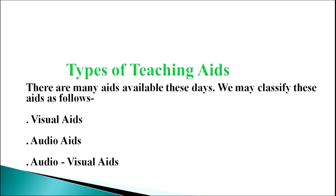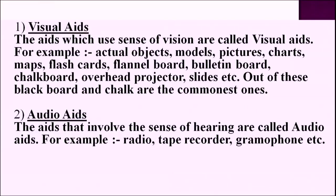Now let's talk about types of teaching aids. There are many teaching aids available these days, classified as follows: visual aids, audio aids, and audio-visual aids. The aids which use the sense of vision are called visual aids. For example, actual objects, models, pictures, charts, maps, flashcards, flannel board, bulletin board, chalkboard, overhead projectors, and slides. Out of these, blackboard and chalk are the commonest ones.